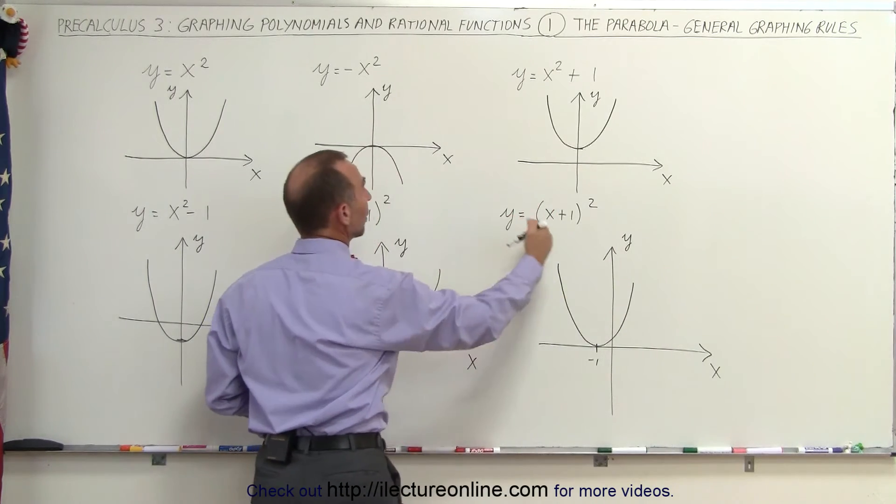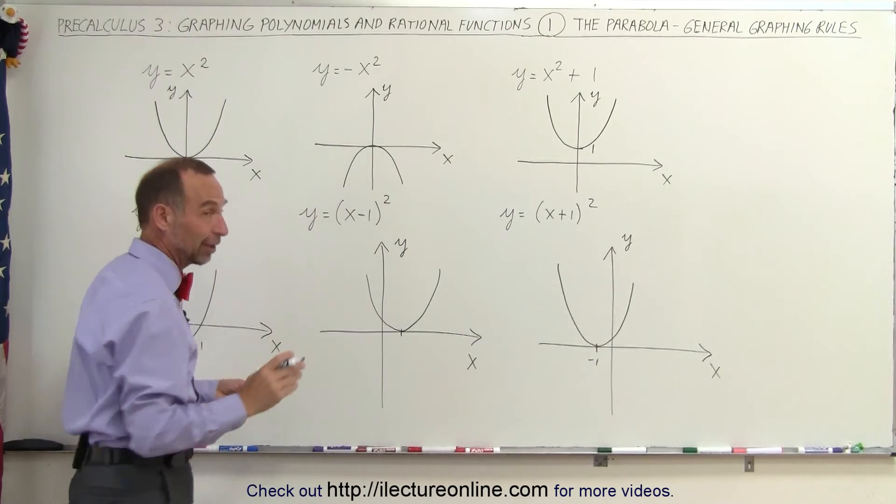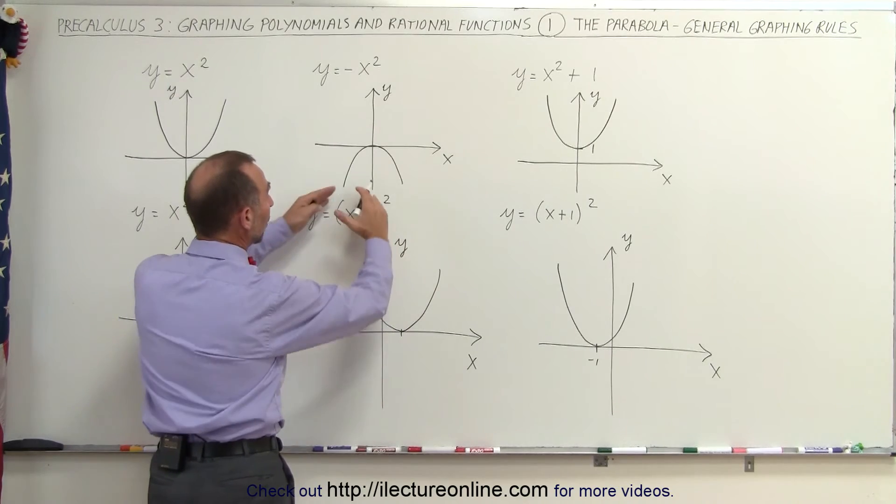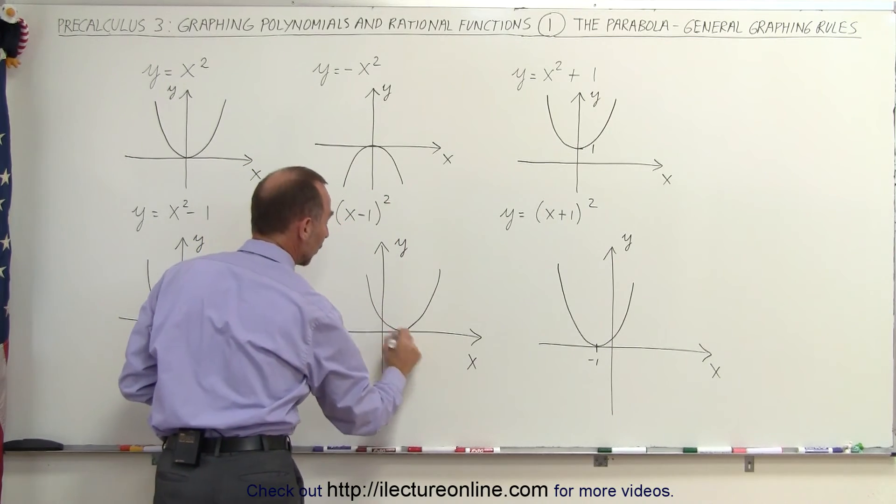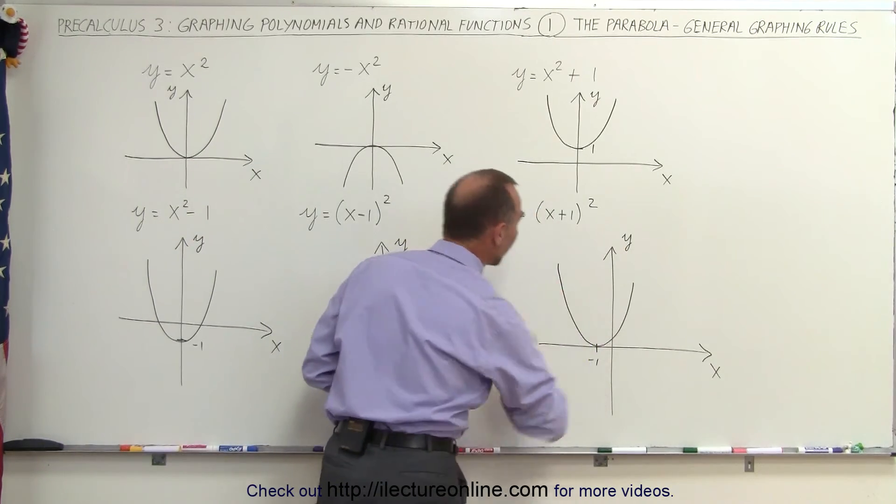So again, if we add a constant, it will raise or lower it by that constant, whatever the value of the constant is. And in the case of adding or subtracting where we have the whole thing in parentheses squared like that, it will make it move to the right if it's subtracted, and it will make it move to the left when it's added.